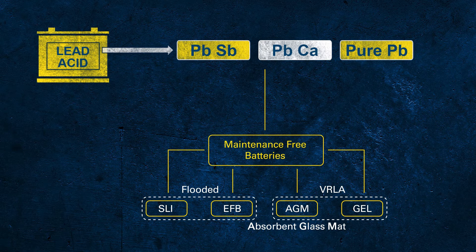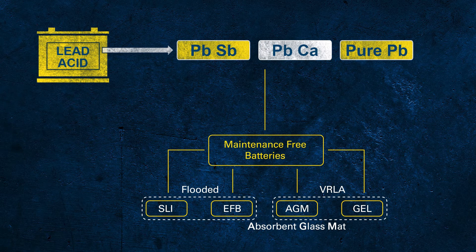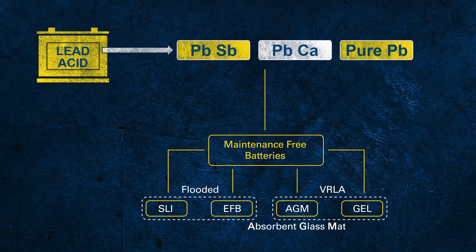AGM stands for absorbent glass mat, indicating the main technological difference to a flooded battery. In this kind of battery, the electrolyte is no longer free but fixed — absorbed in a glass mat separator. Each cell is sealed from the environment, and every cell is equipped with a separate valve to release potential overpressure and avoid permanent damage. This construction provides higher performance and reliability than a flooded battery.